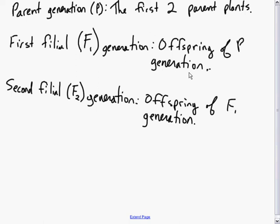If you take these offspring and you mate them together again, brothers and sisters, you get what's called the second filial generation or the F2 generation, and they are the offspring of the F1 generation.